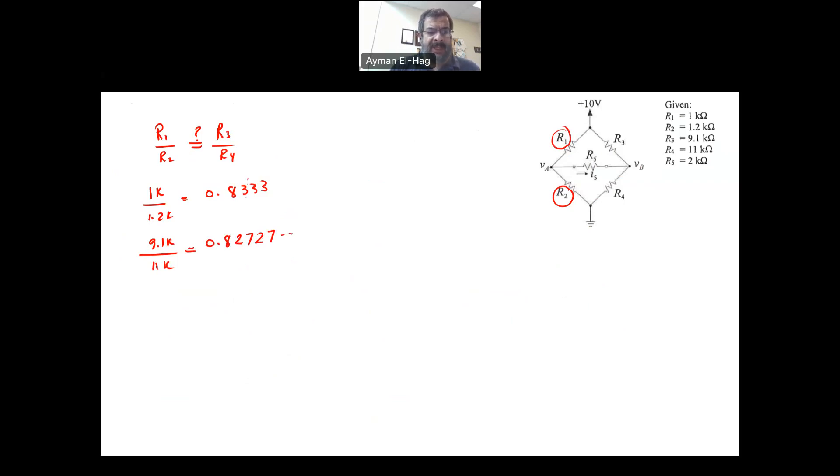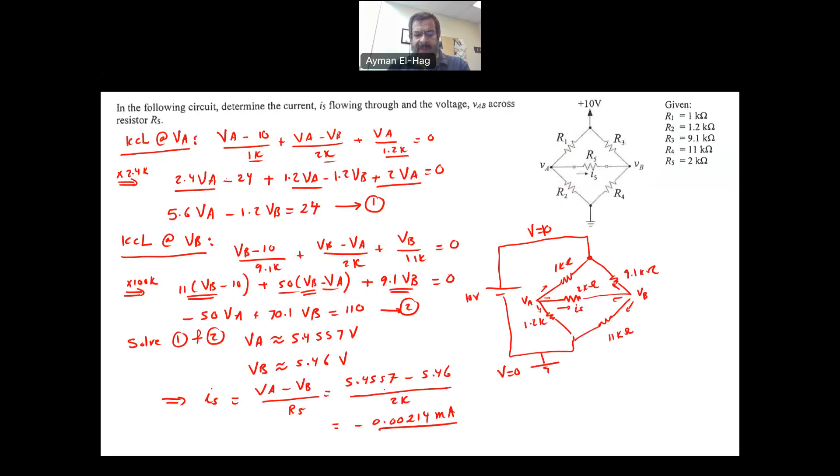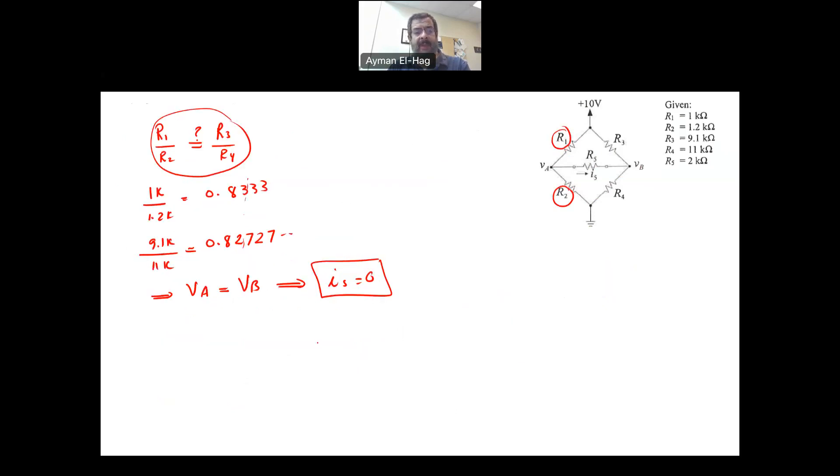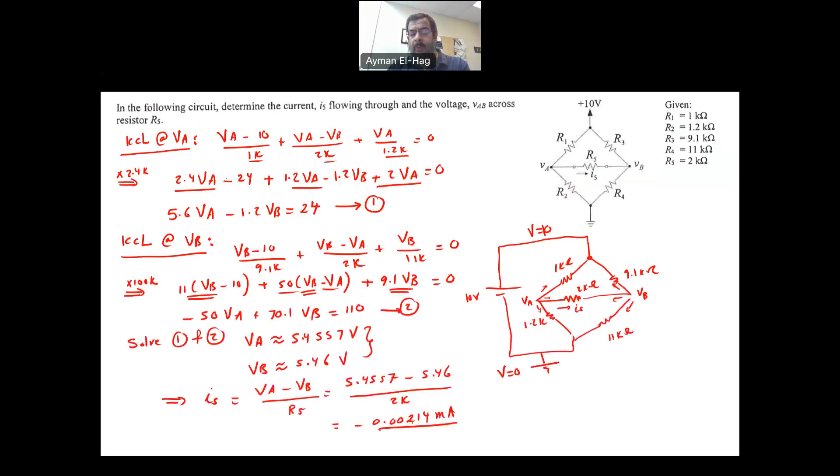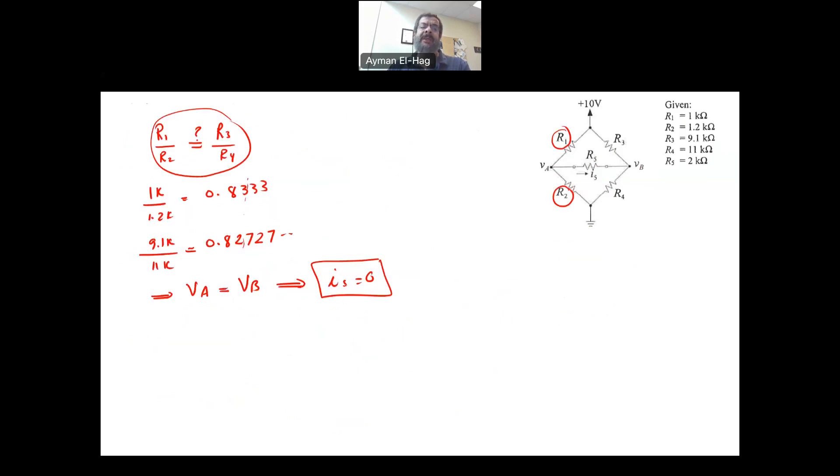So when you look here for the second digit, if you approximate this, they are almost equal. So if these two ratios are equal, it means that VA is actually equal to VB, and this will make your I5 equal to 0. Now when you look to the full answer, VA and VB are indeed very close to each other. They are almost the same. If you take the approximation of VA to the second decimal digit, they are 5.46, will be the same. And when you look to the current, it's basically equal to 2.14 microamps, extremely small current.